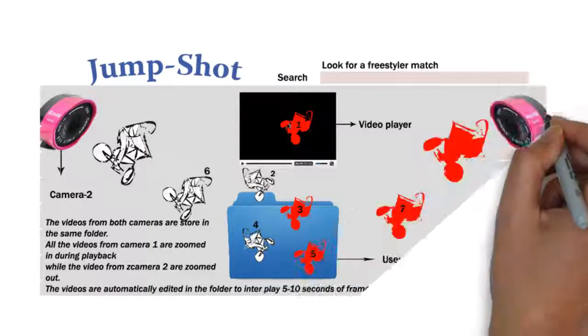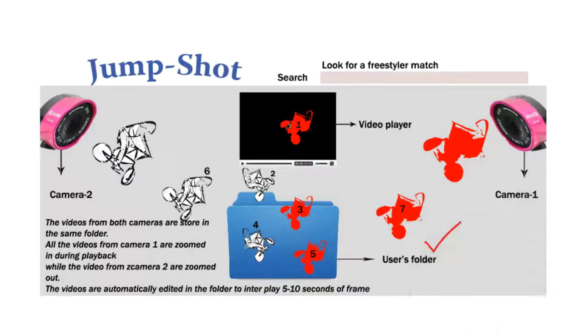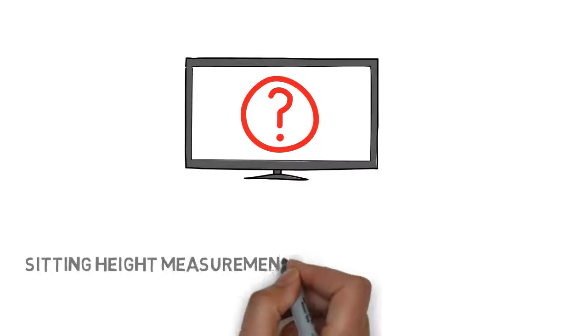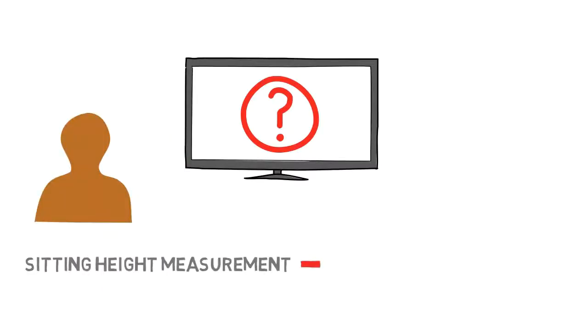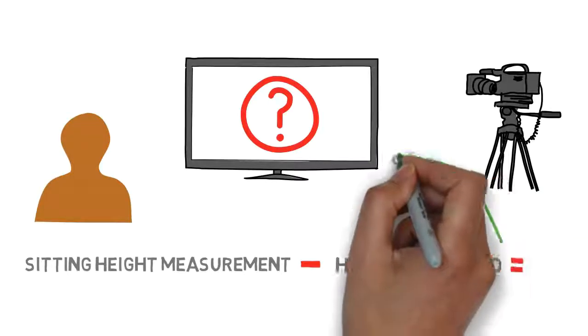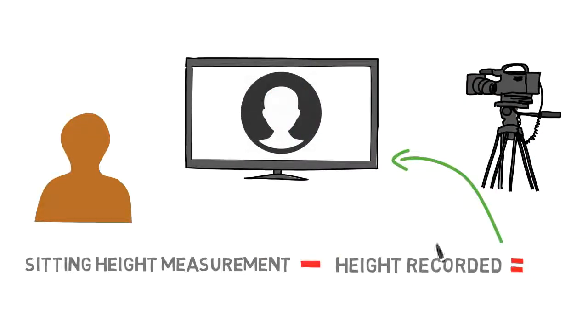The system will store all the files from the sensors and cameras in the user's folder where the files are automatically edited and played back on the screen. Before displaying the final result on the screen, the system will take user's sitting height measurement from the user's profile and subtract the values from the height recorded on the action camera and displays a final result with user's profile picture on the screen.